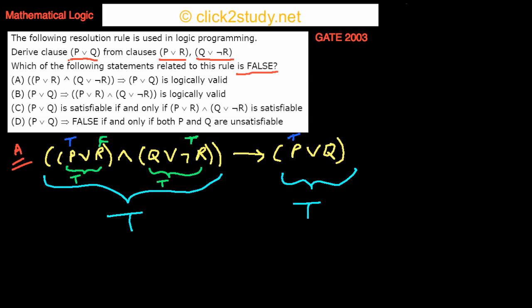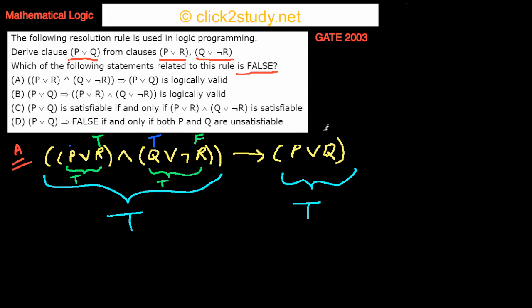Now suppose R is true. Then not R is false. For (Q or not R) to be true, Q is forced to be true. Since Q is true, (P or Q) on the right side is also true. So in both cases when R is false and when R is true, the implication holds.